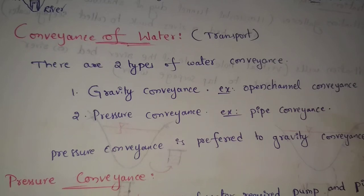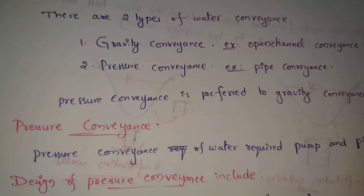Pressure conveyance is different. For example, pipe conveyance uses pressure through conduits. Conduits means pipes. These pipes are used to transport water, and pressure conveyance requires pumps.